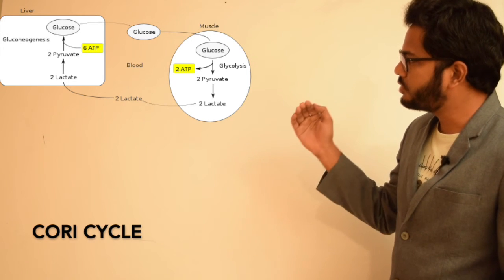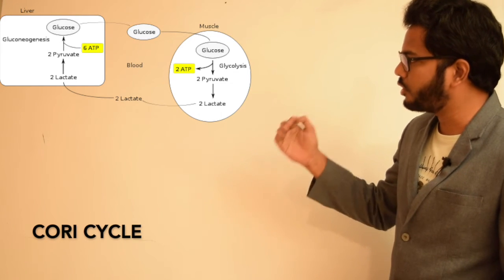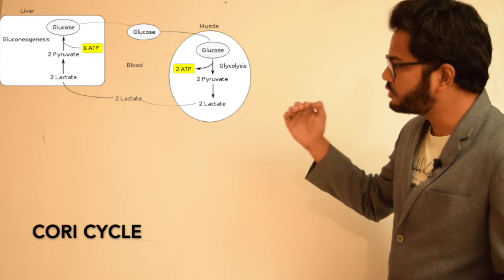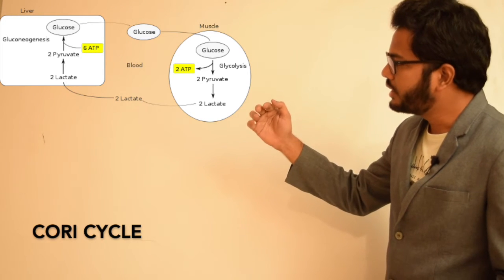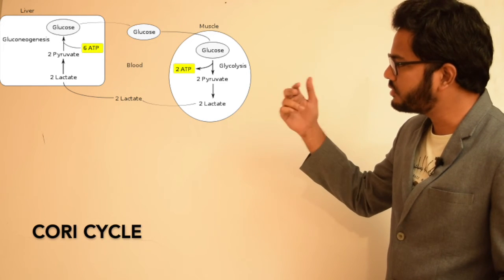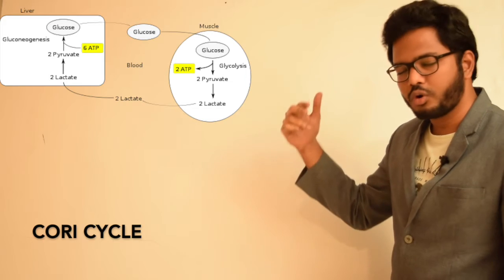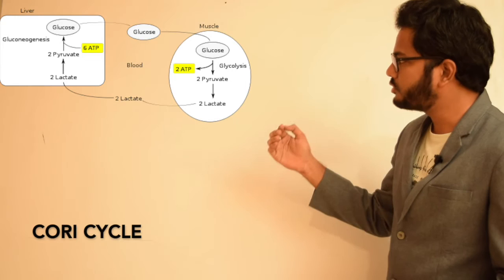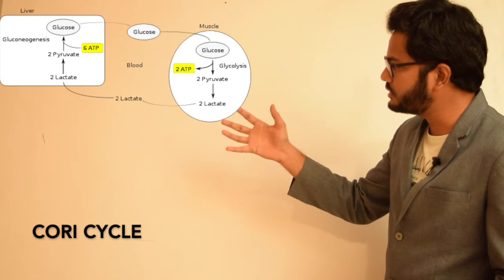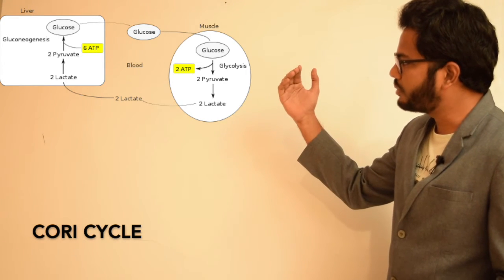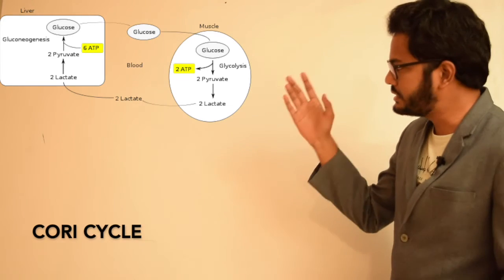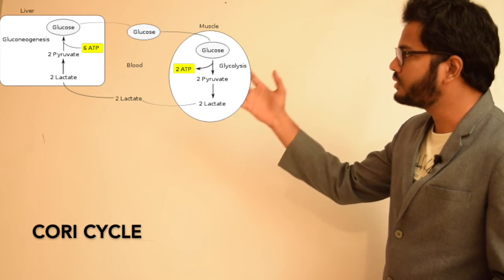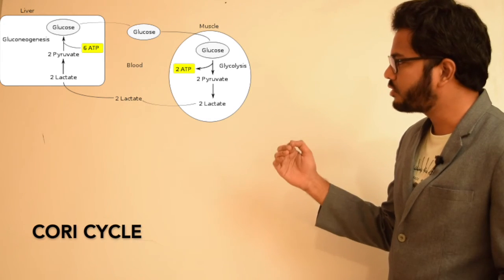As seen in this image, lactate accumulates in skeletal muscle and cannot be used for glucose generation within the muscle, so it is transferred to the liver via the bloodstream. In the liver, gluconeogenesis occurs and part of the glucose can also be stored as glycogen. This glucose generated in the liver is then transferred back to the bloodstream for use by skeletal muscle.